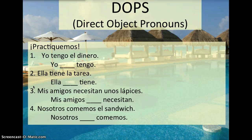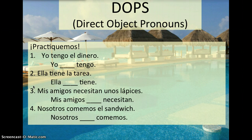Now let's do some practice together. Yo tengo el dinero. In that sentence you want to ask yourself, what is it that I have? El dinero — the money. So you would like to now change the sentence to say 'I have it' instead of 'I have the money.' You're going to look at el dinero — if it helps, circle el dinero — and you are replacing that in your sentence. Because it is masculine and singular, you are replacing it with lo. Yo lo tengo. I have it.